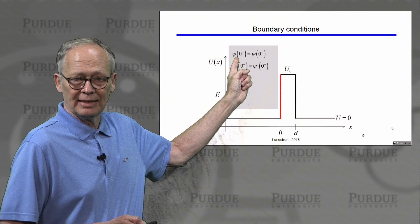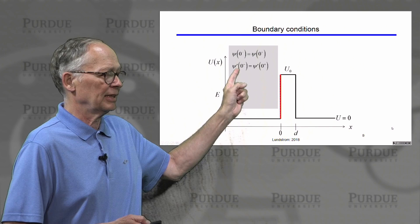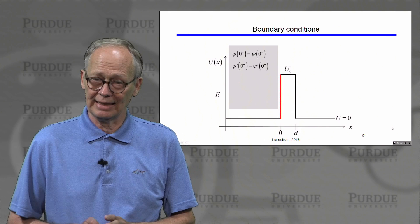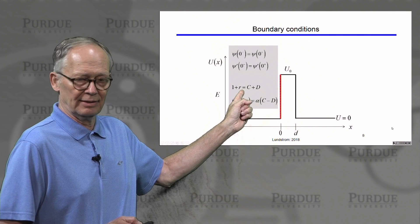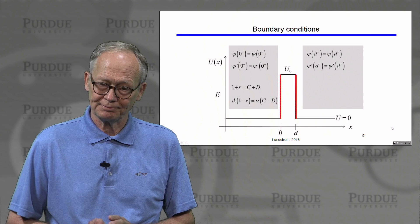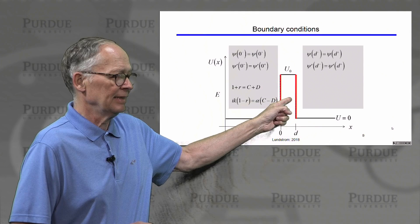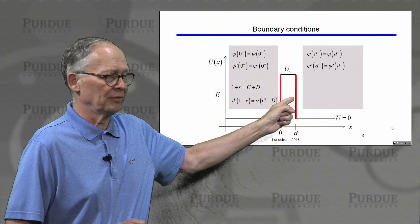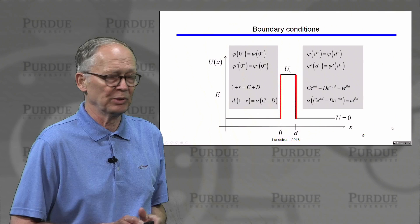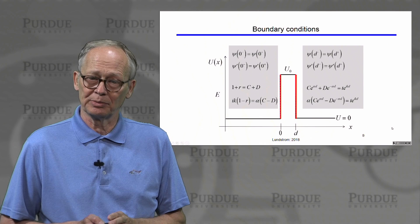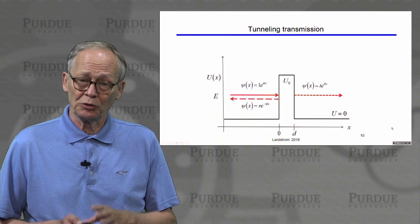At the first boundary x equals zero, the wave function is continuous — its value at zero-minus equals its value at zero-plus — and the slope psi-prime at zero-minus equals the slope at zero-plus. Applying these conditions to the known form of the equations gives two equations. At the second boundary x equals d, the wave function and its derivative must also be continuous across the interface. Applying those boundary conditions to the known solutions gives two more equations. It is then simply a matter of algebra to solve this system.